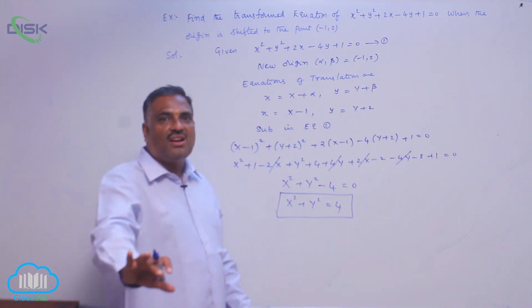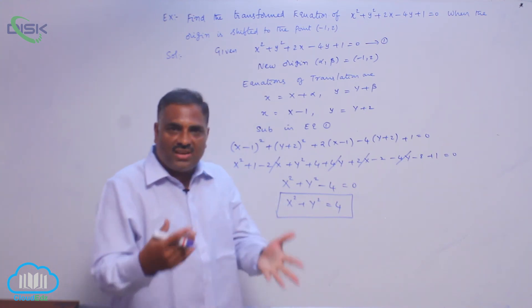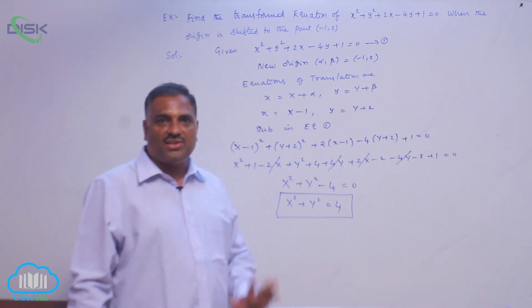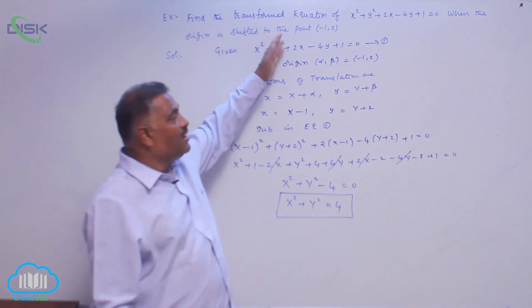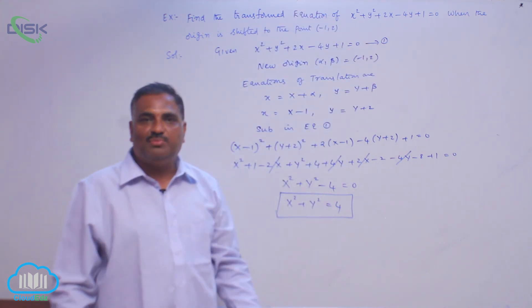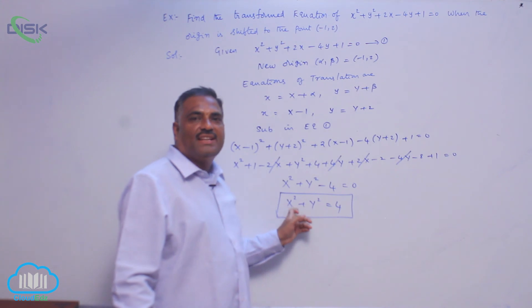Small x, y equation is called original equation. Capital X, Y equation is called transformed equation. That is what we need to find. He is asking for transformed equation. That means the final answer must be in terms of capital letters X and Y.